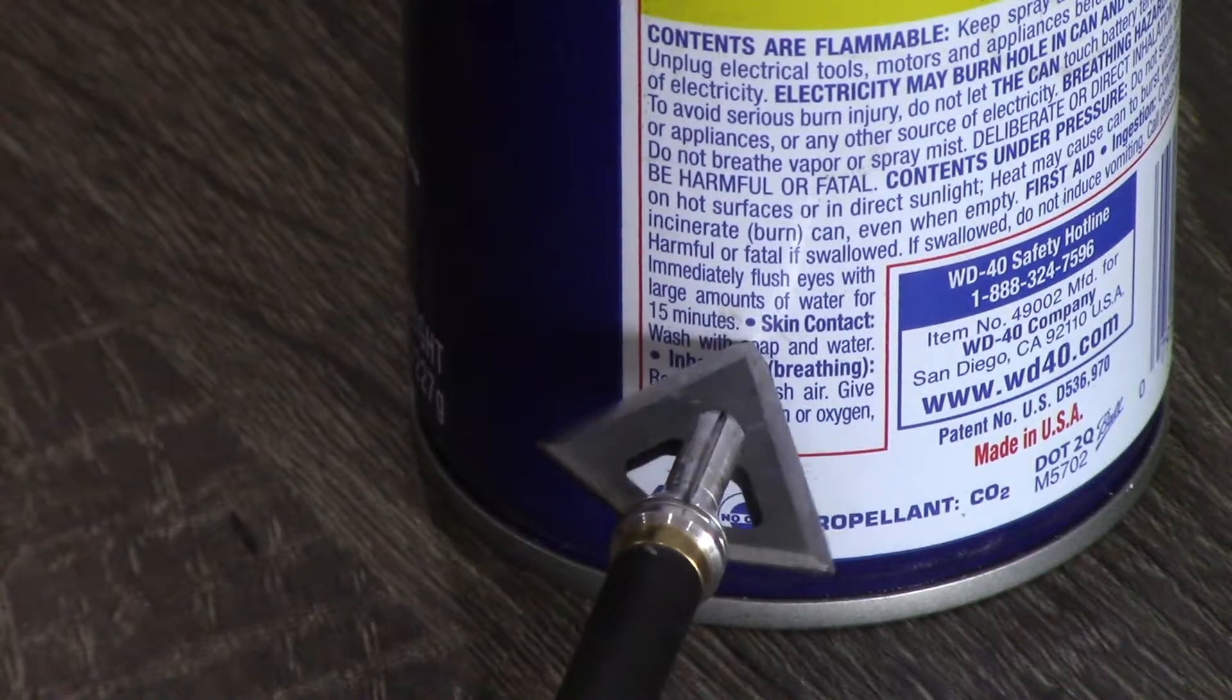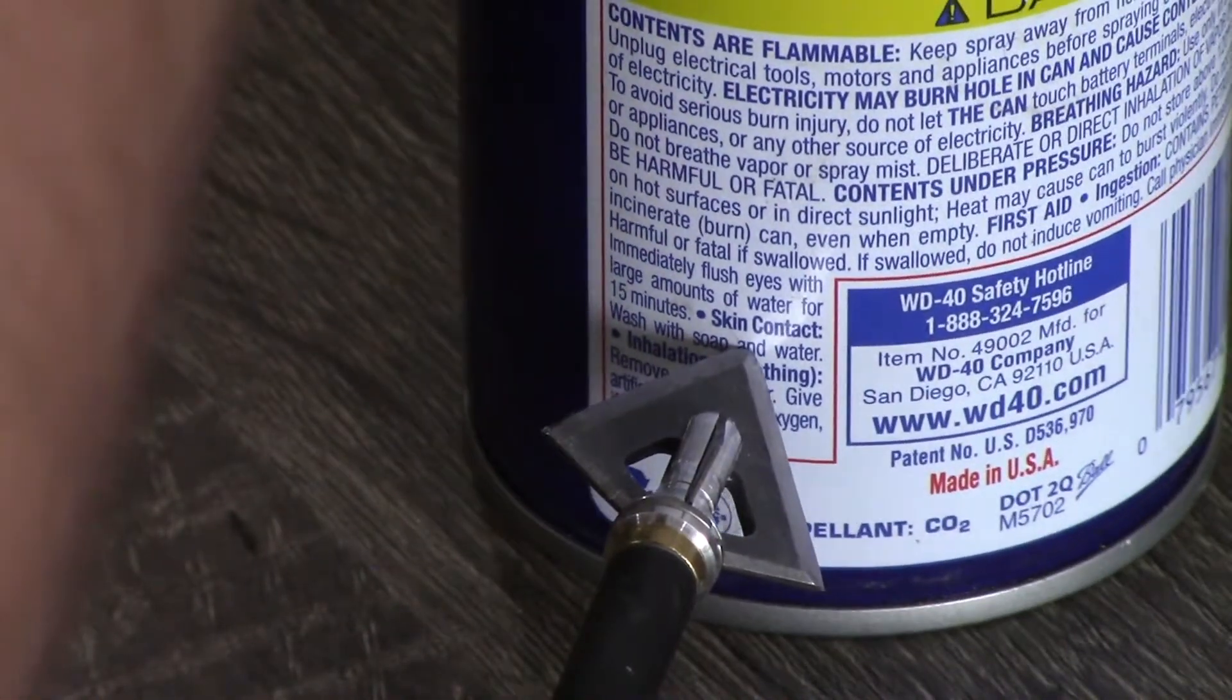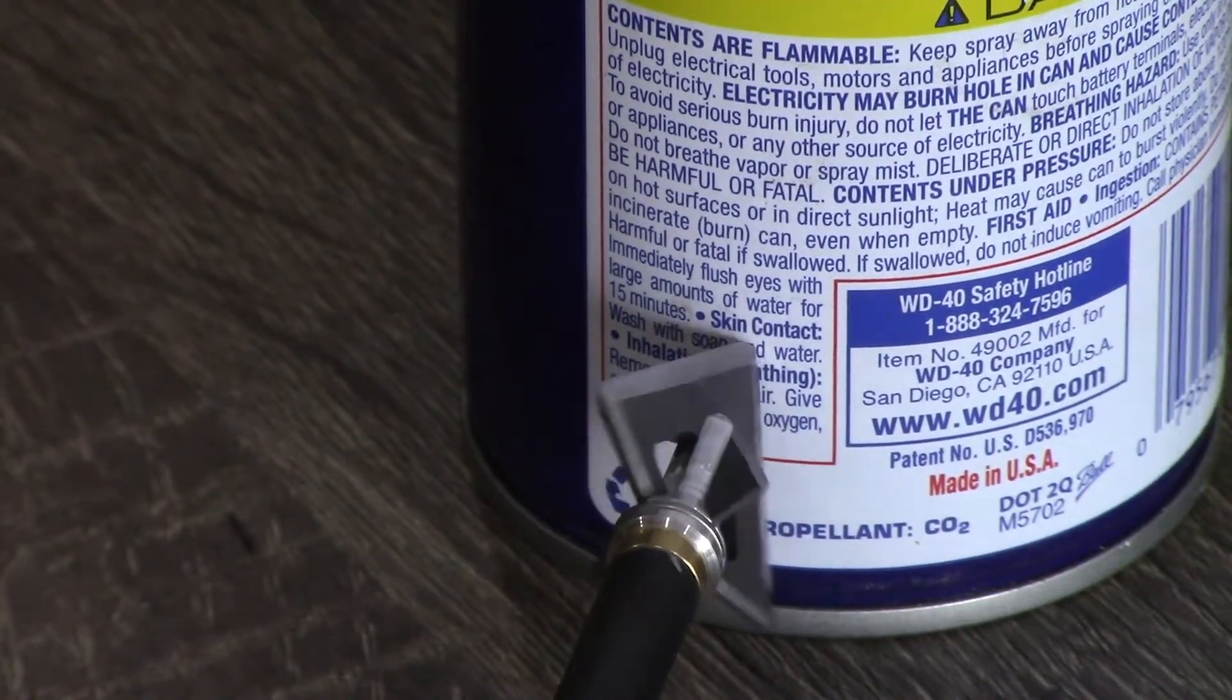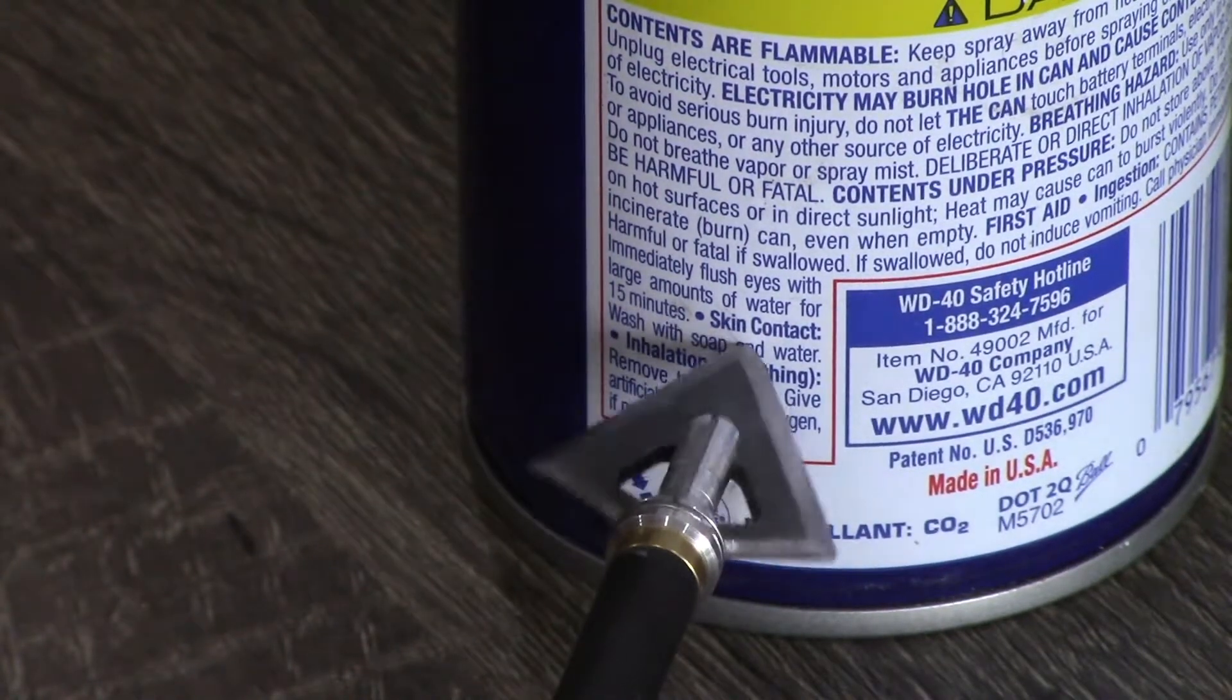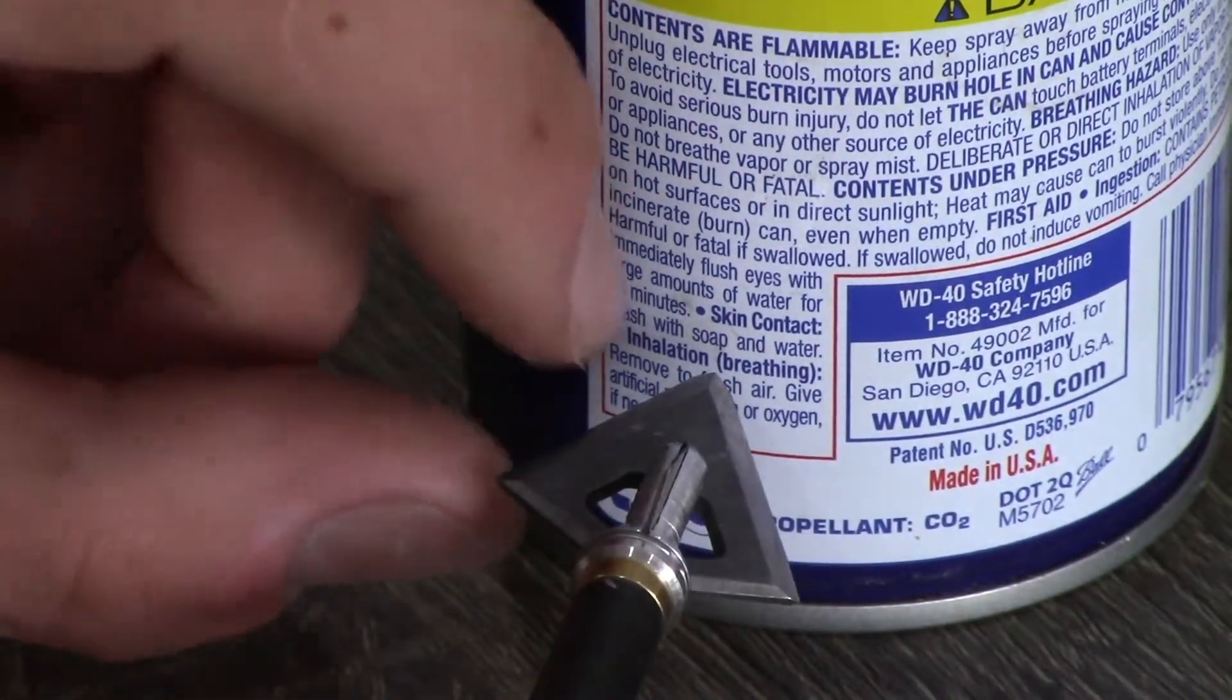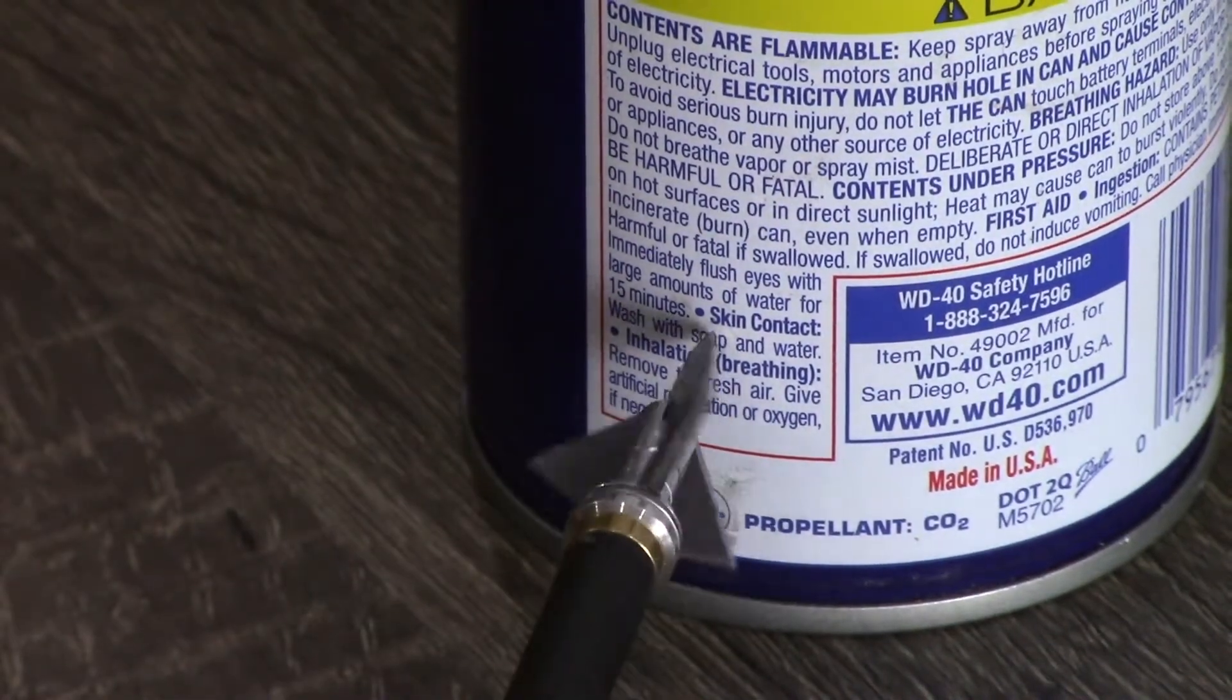Another way of doing this is by putting the broadhead up against a fixed object such as this WD-40 can and rotating it very slowly on the spinner. And you can see the tip of the broadhead just has a little bit of wobble in it. You can tell as it changes its place against the letters. So I'll just rotate this a quarter turn and see if that eliminates it.